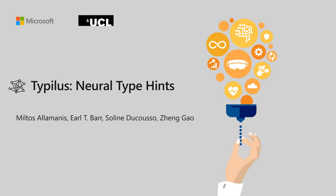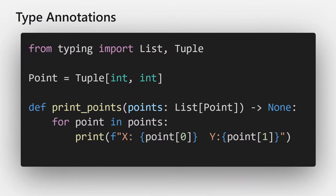Hi. In this work, we start to suggest type annotations to partially typed programs. Python allows optional type annotations. Take this simple example here. The parameter points is annotated as a list of points, whereas the print_points function has a return type of none.